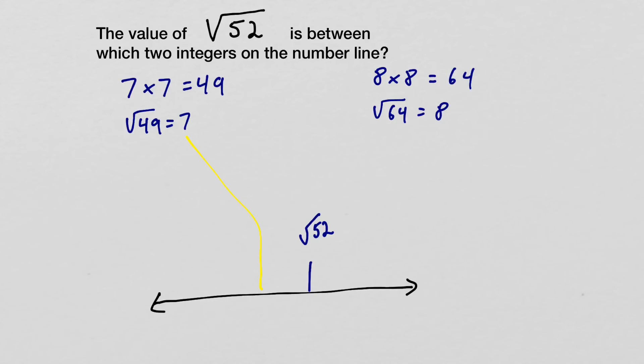So 7 is going to be somewhere down here, and 8 is going to be somewhere over here.